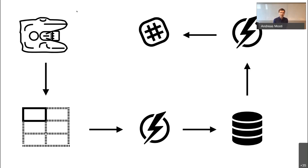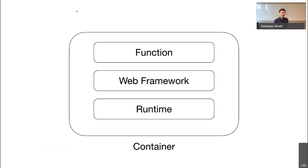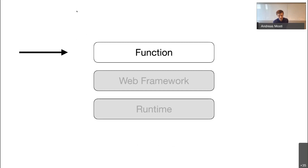From a developer happiness standpoint, serverless is also quite nice. Let's say you want to write code that only takes one data format and transforms it to another — like log files you want to put in a database. In the traditional way, you'd choose a runtime, choose a web framework, and then get to coding. With Function as a Service, you don't have to do that — you just write the code and deliver it to the platform, which runs it for you.